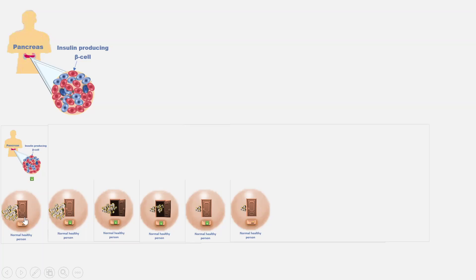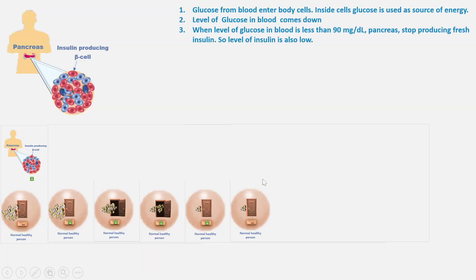After meals, glucose enters the blood, the pancreas makes insulin, and insulin binds to the insulin receptor and opens up the door. Glucose enters the cell and the level of glucose in the blood comes down. The pancreas stops making fresh insulin. So, three changes take place in a normal healthy person: glucose from the blood enters the body cell, the level of glucose in the blood comes down, and when it reaches 90 mg per deciliter, the pancreas stops making further insulin. So the level of insulin in a normal healthy person is also low.